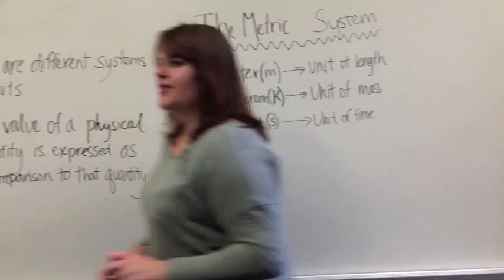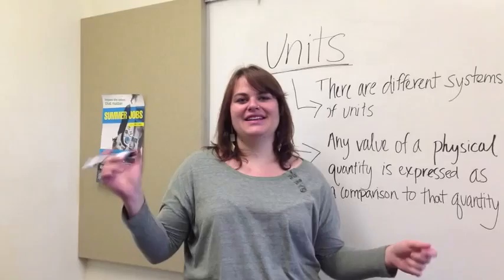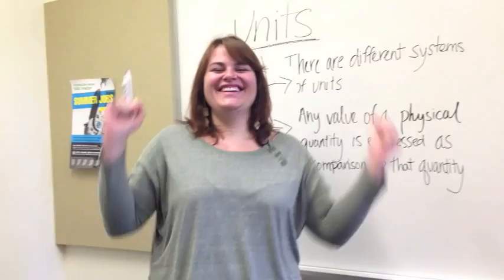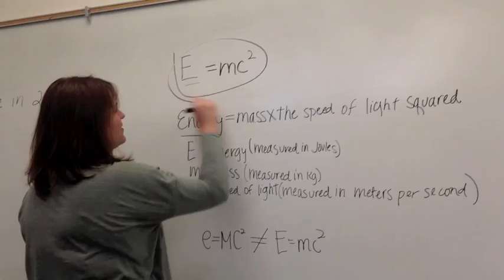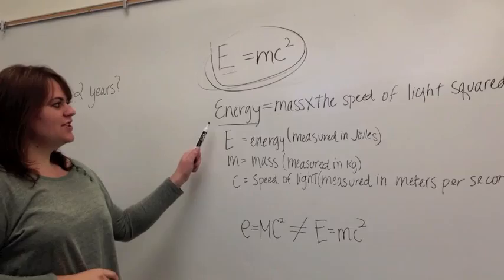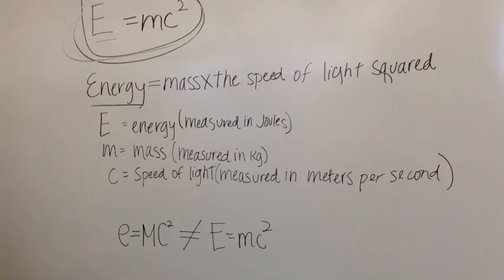So if we think about the most famous equation that we can think of, what is it? E equals mc squared. E equals mc squared is one of the most famous equations in the world, and it means energy equals mass times the speed of light squared. And so it's very important to look at what these terms all mean.